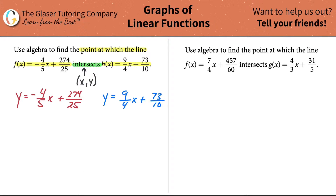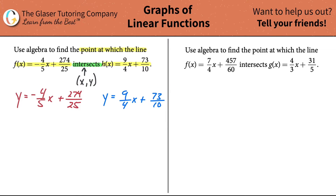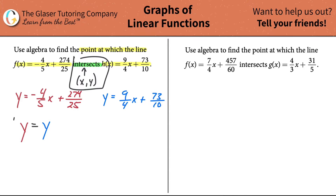Let's apply the meaning of intersection algebraically. The y coordinate value of the red equation at the point of intersection will be equal to the y value of the blue equation at that point. All I did was take the understanding of the word 'intersection' and create a simple math equation: red y equals blue y. That's true because the point of intersection has a common y coordinate.